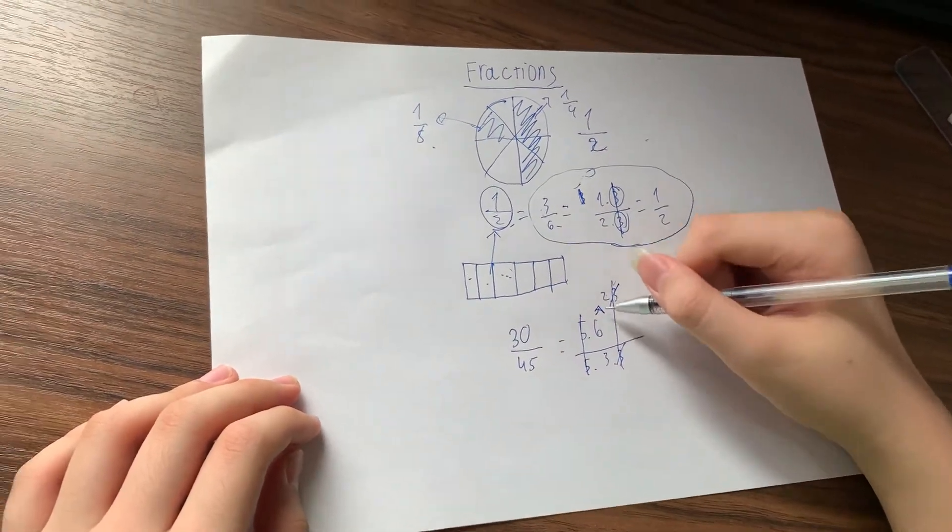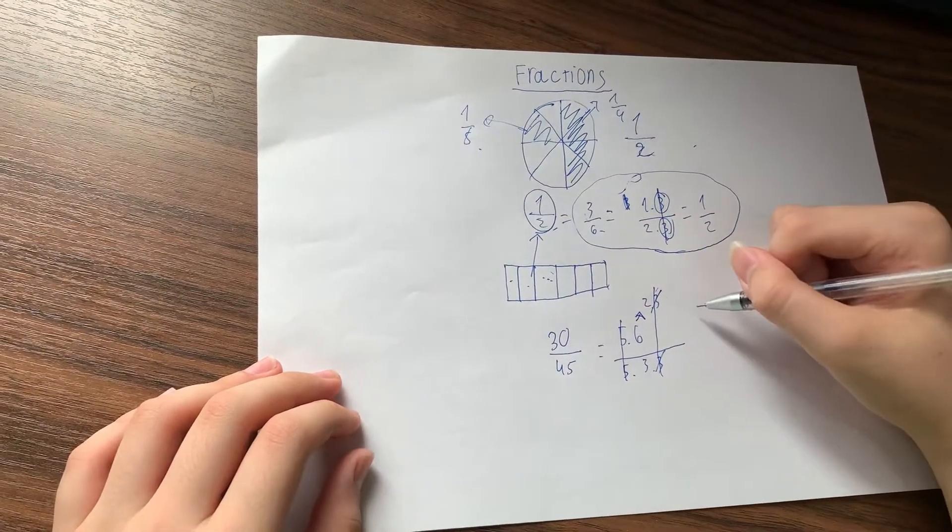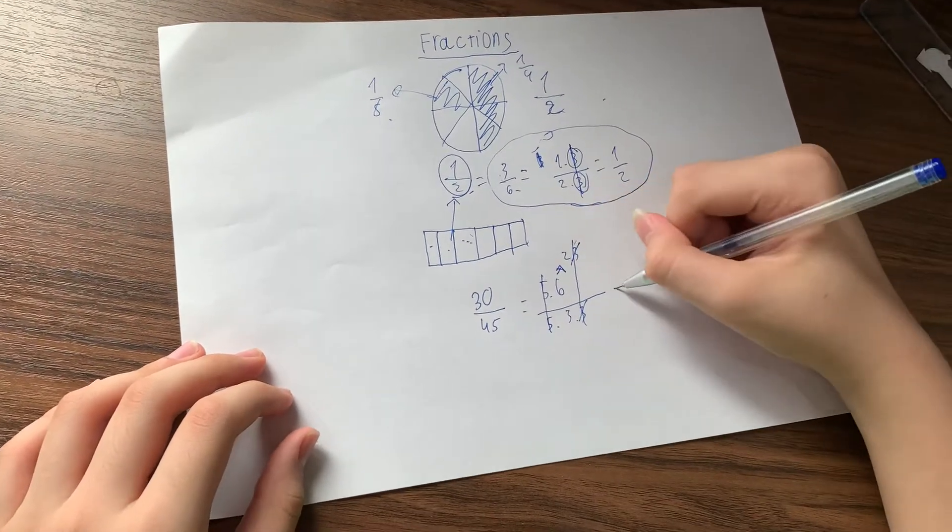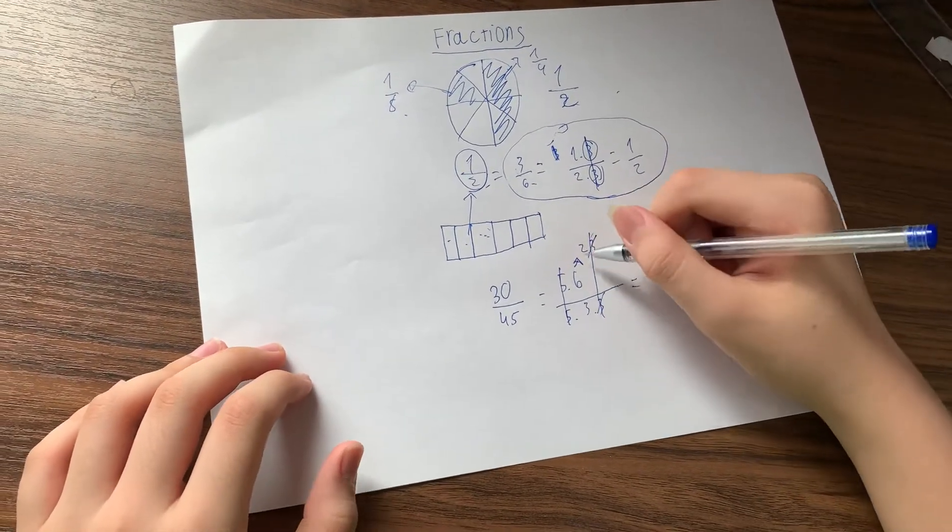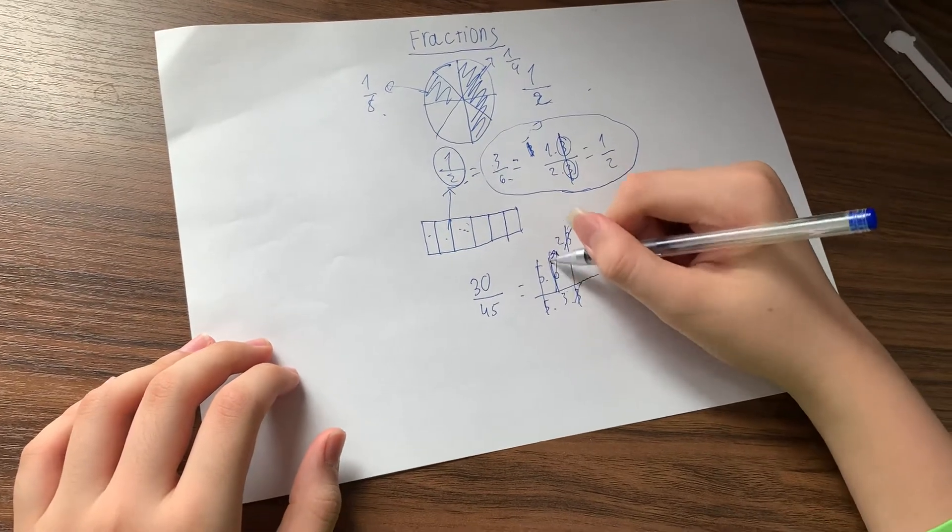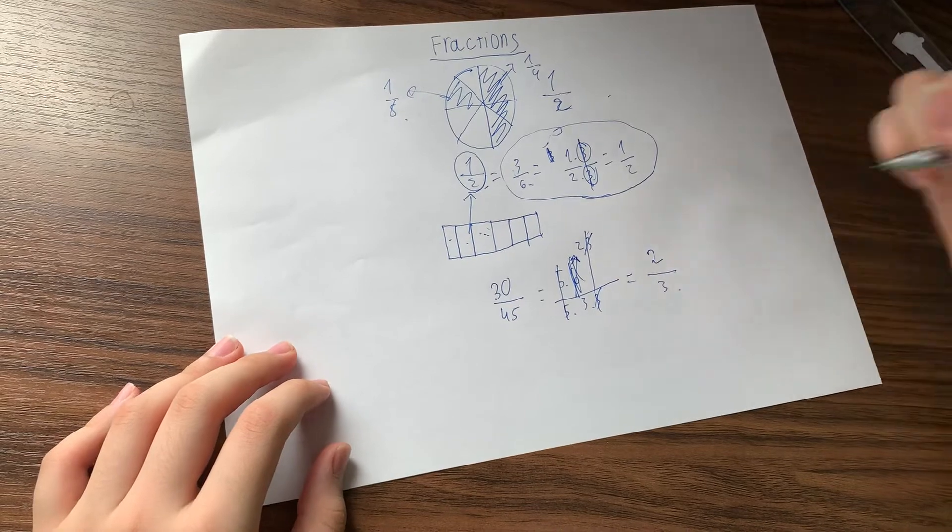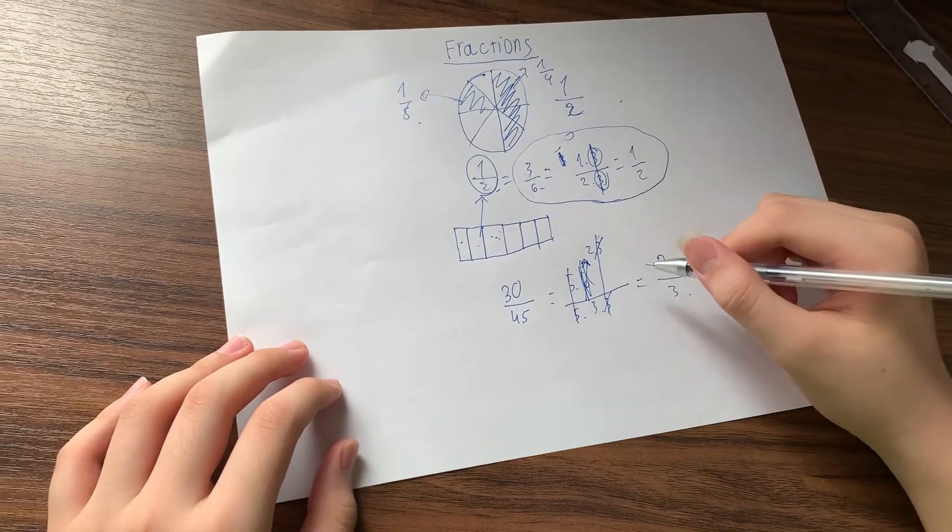We can't leave the fraction like this. The fraction has to be more simplified. So you don't have to care about that. This is equal to two over three. And that's exactly what it does.